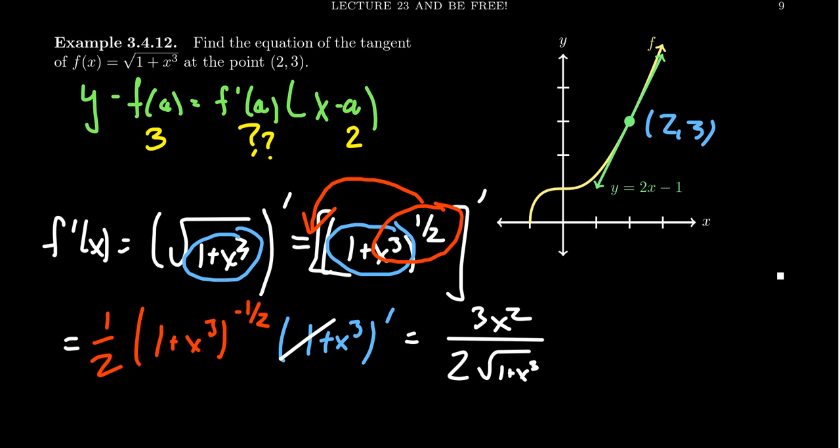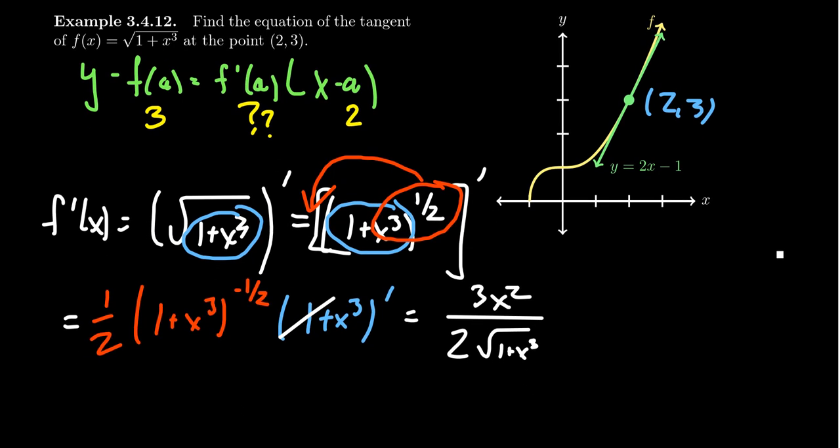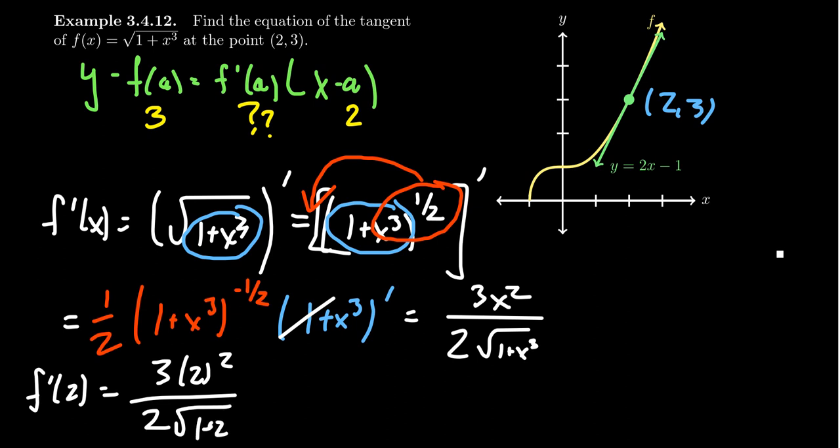Now, we don't actually need the derivative per se. What we need is the derivative evaluated at 2. So as we try to compute f'(2), we could have cleaned up our derivative like we did. We didn't actually have to. But we need to plug in 2 into this function to see what happens. So we get 3 times 2 squared over 2 times the square root of 1 plus 2 cubed.